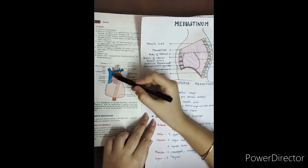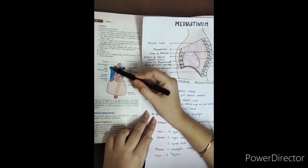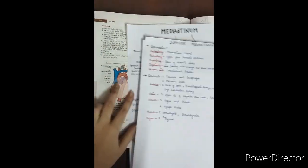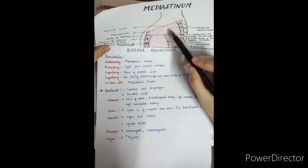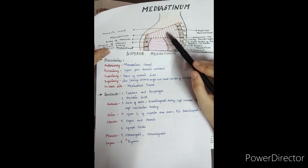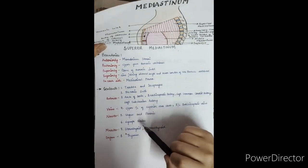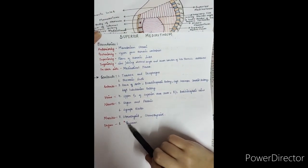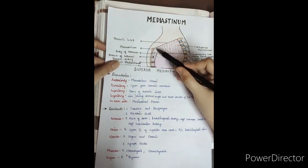Then let's see the veins. The veins come from the upper half of the superior vena cava, and the branches are the right and left brachiocephalic veins. The nerves present are the phrenic nerve and vagus nerve. The phrenic nerve passes through the middle mediastinum and the vagus nerve passes through the posterior mediastinum. Then lymph nodes, and the muscles — sternohyoid and sternothyroid. And most importantly, the organ present is the thymus.